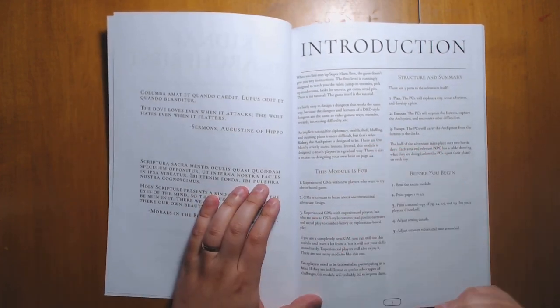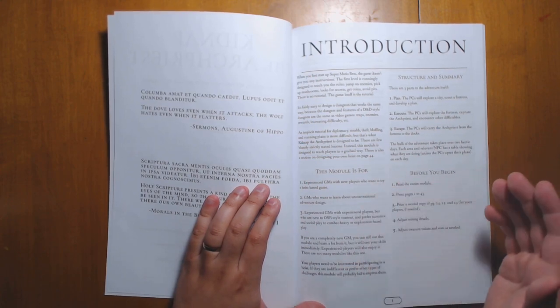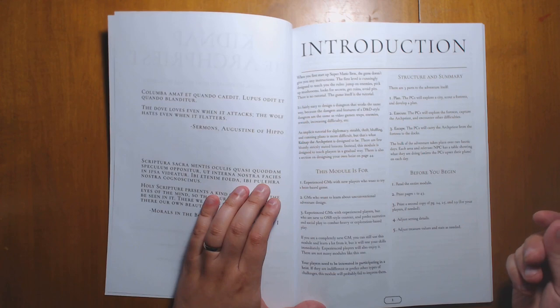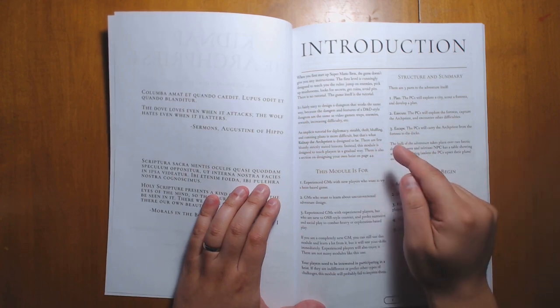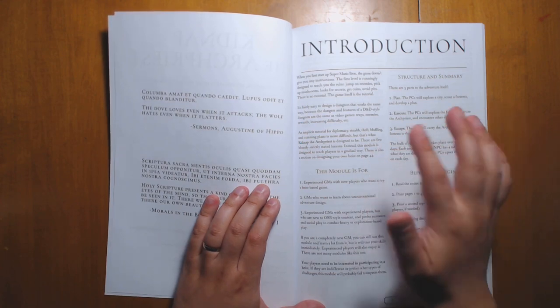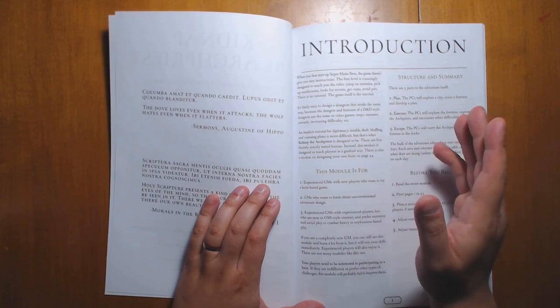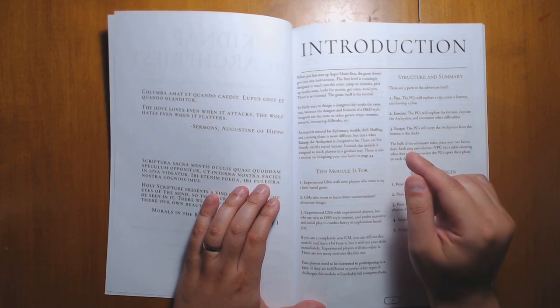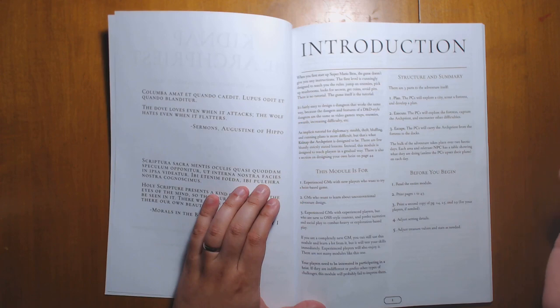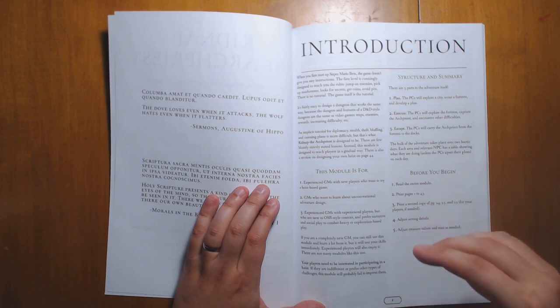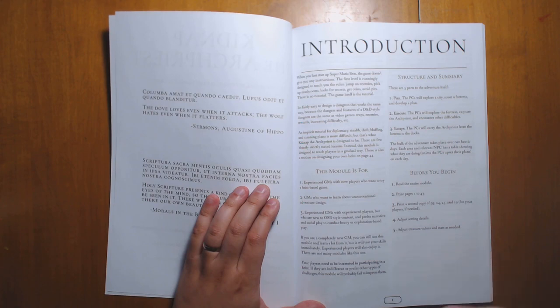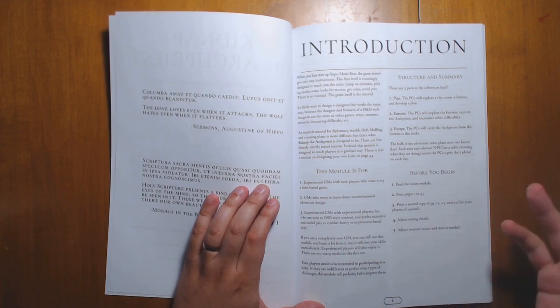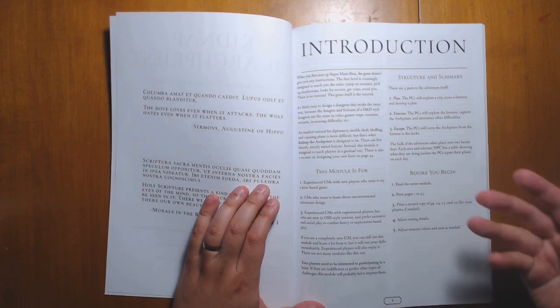So basically, who is this for? This is for experienced GMs who want to try heists, GMs who want to learn more about unconventional adventure design. Because one thing that Skirples does a lot is he has these intro adventures - this is one of them. Another one is the Tomb of the Serpent Kings, which is an intro dungeon. And what he does really well in these adventures is he uses them as a teaching tool, not only to teach Game Masters how to design modules like this, but also teaching tools for the players. If you throw players into these types of adventures, they learn about the old-school style of play just through actually playing it. In the same way that you might play Mario, and Mario doesn't have a tutorial, but you learn through playing.